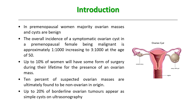Up to 20% of borderline ovarian tumors will be discussed as well. Borderline ovarian tumors, as the name suggests, are somewhere between benign and malignant — they have malignant potential. They may appear as simple cysts on ultrasonography.